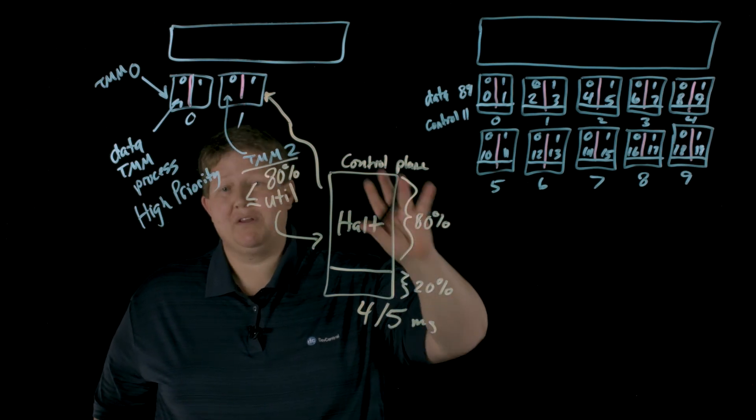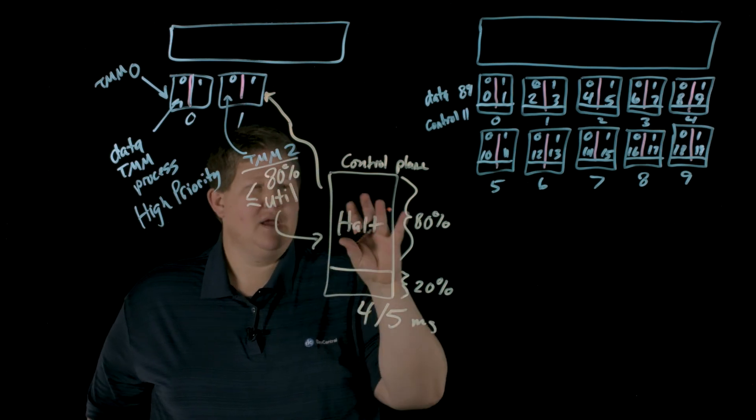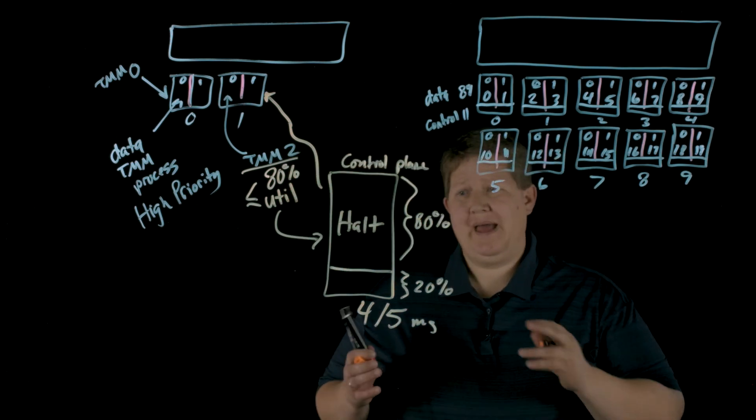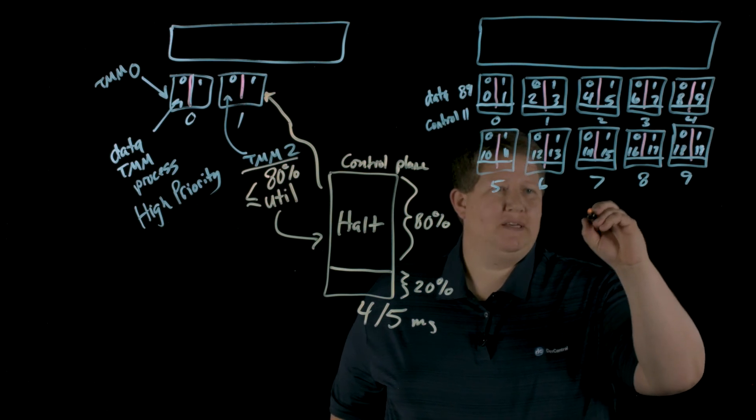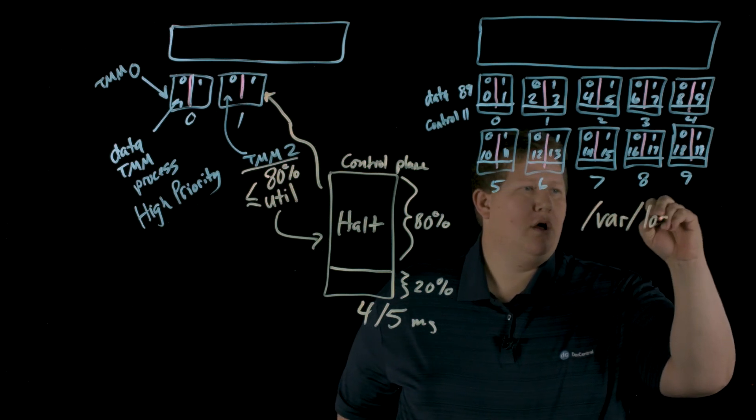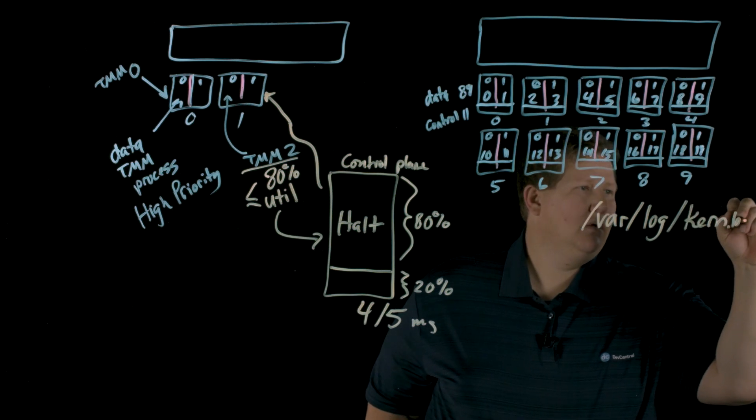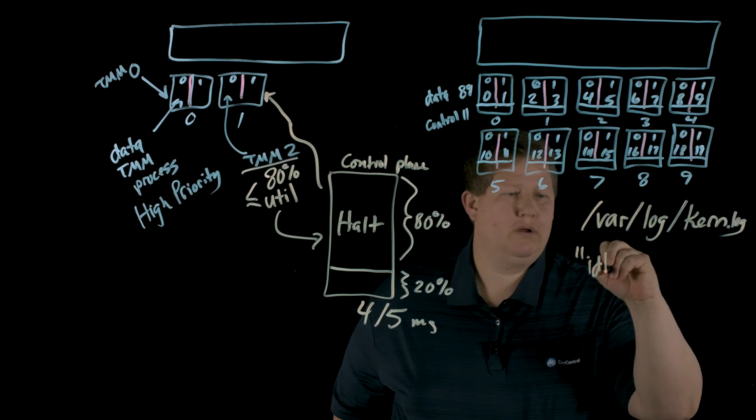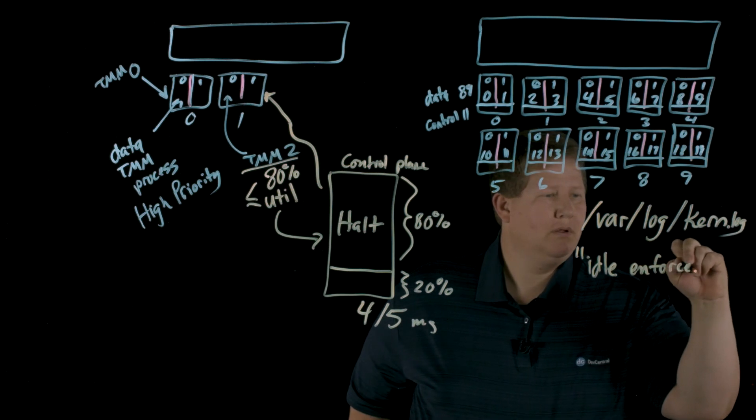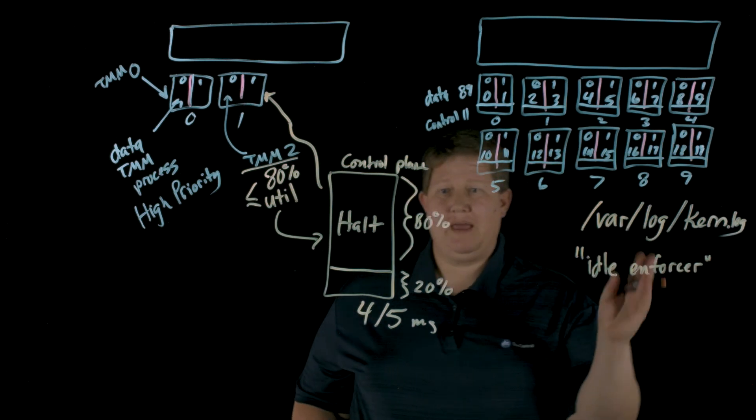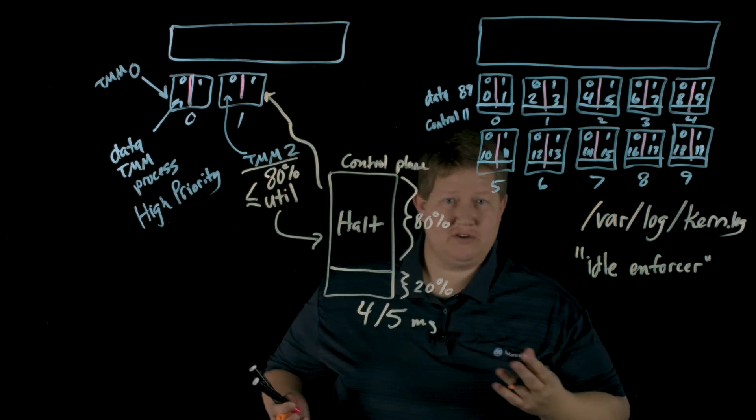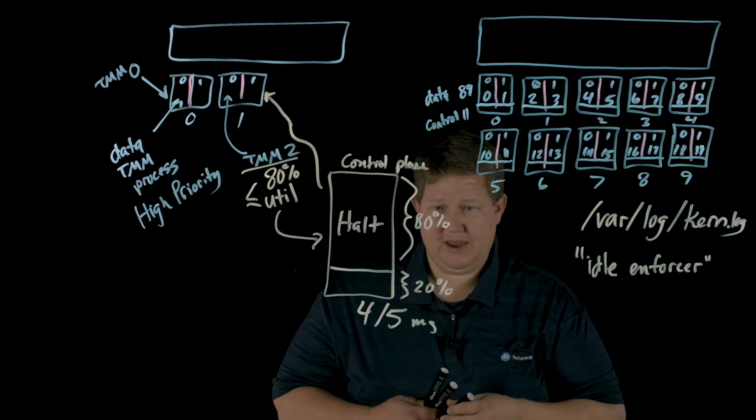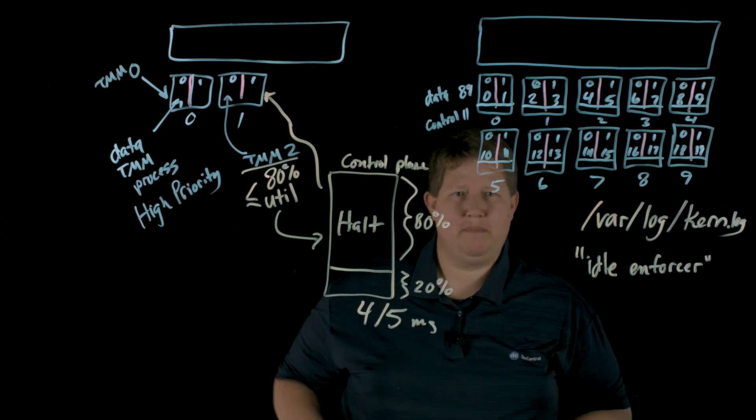It's still going to be able to use the thread for control plane tasks, but we want to prioritize the data plane. And so data plane gets priority. Control plane still gets to work, it just has to work at a reduced rate. If this happens on the system, in var log kern.log, you'll see a log message for idle enforcer. When you see an idle enforcer log, that means that this scenario has happened. TMM thread is at 80% utilization or greater, and so the control plane thread is going to be reduced capacity down to 20% until this threshold is crossed back on the way down.